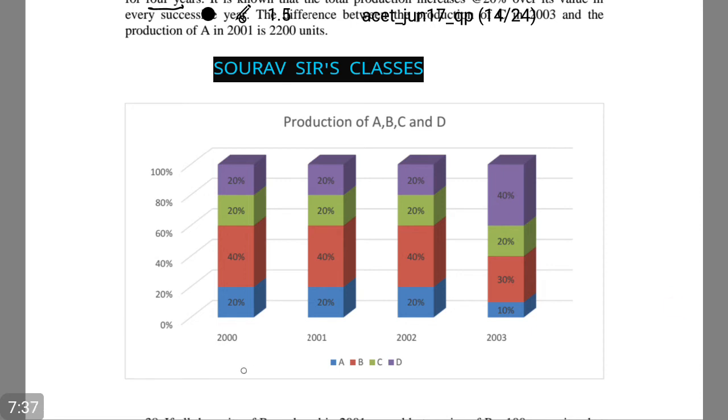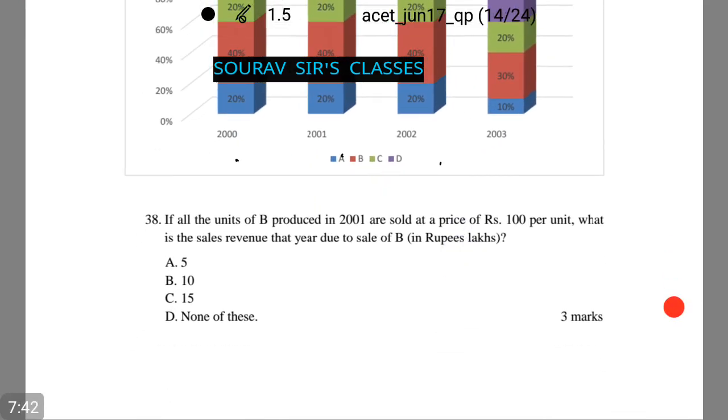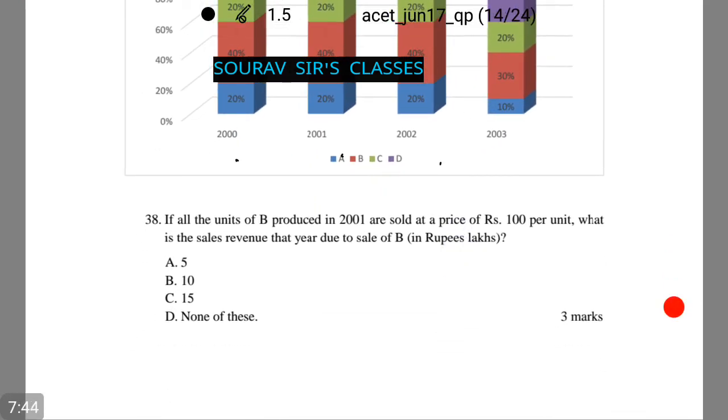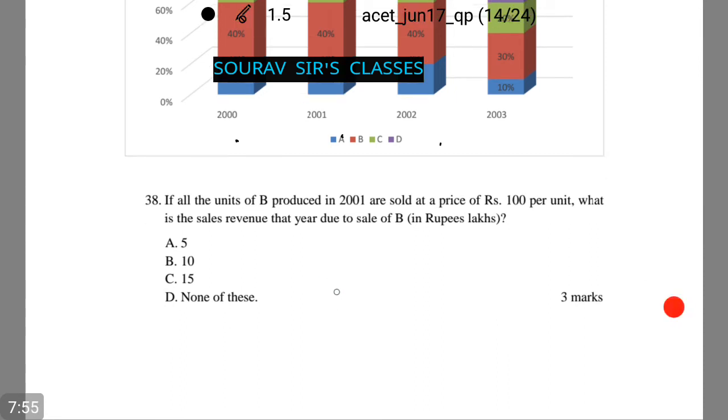It is given for 2001, 2002, 2003, and as well as 2000. Let us see what the question is. If all the units of B produced in 2001 are sold at the price of Rs. 100 per unit, what is the sales revenue? Now let us take the total production in 2001 as x.